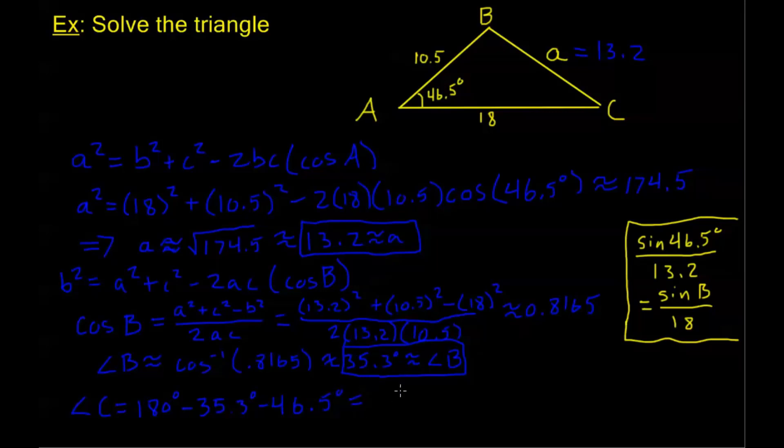And this is going to give us our angle C, which is about 98.2 degrees. This is my angle C. So there's all our three missing pieces of information. This is how we use the law of cosines to solve a triangle.